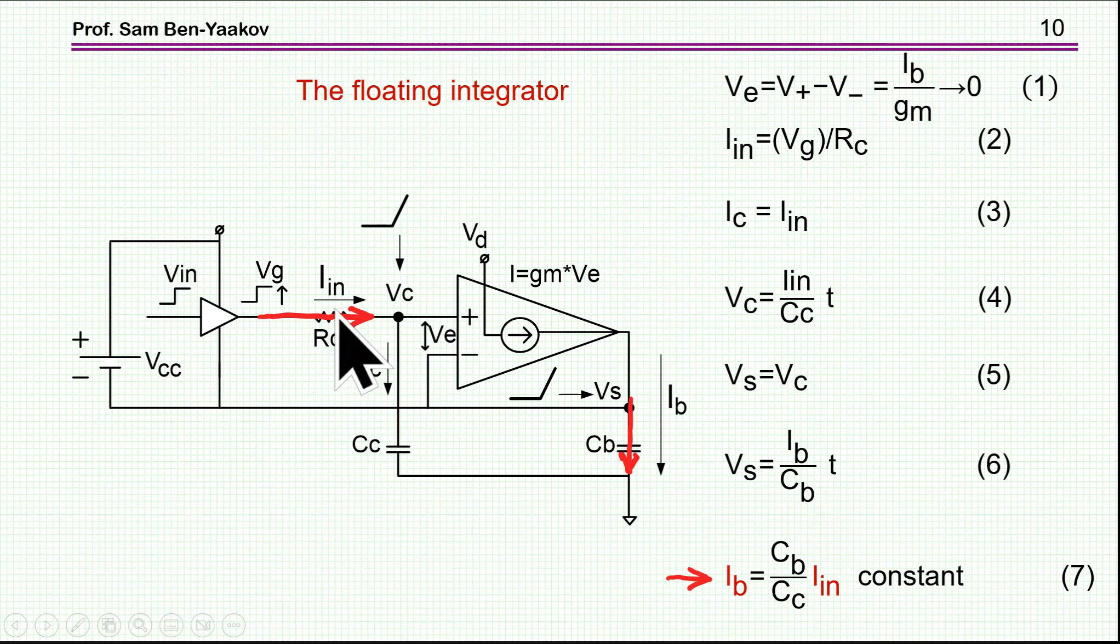So therefore, the current here will be the voltage divided by this resistor. Now the input impedance of this amplifier is assumed to be high. So therefore, the current cannot go here, but it will pass through this capacitor. And as a result, the voltage of the capacitor will rise linearly, the current over the capacitance times time. This will be the voltage here.